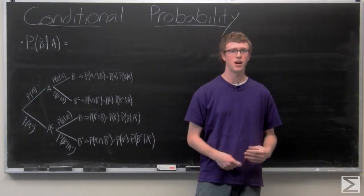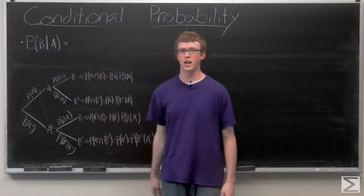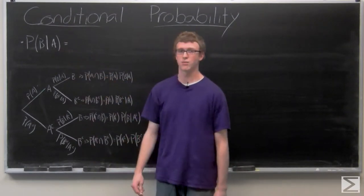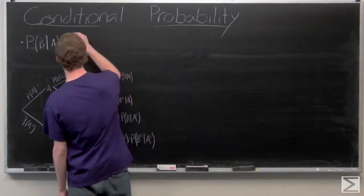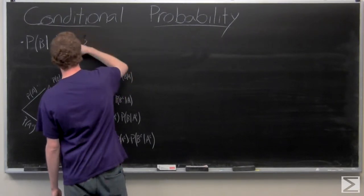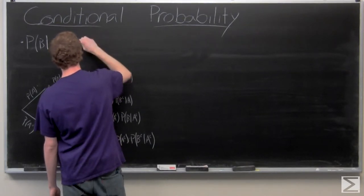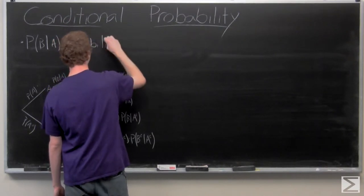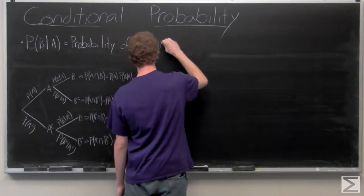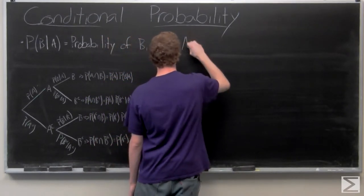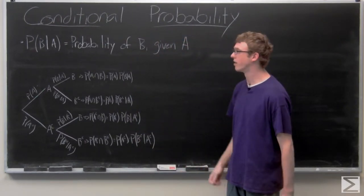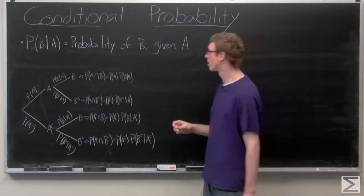We looked at conditional probability, which means that we're looking at the probability of an event B occurring given that A occurs. So that's what this notation means. And the probability of B given A is going to be the probability of A and B over the probability of A occurring.